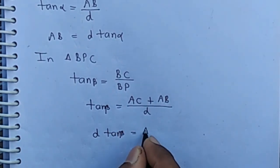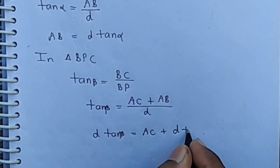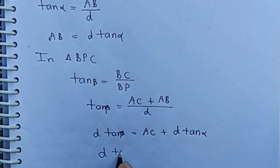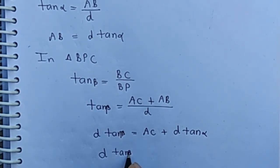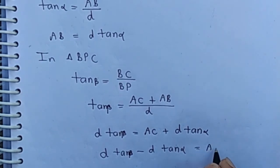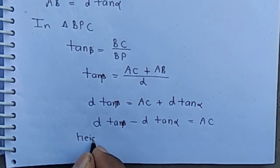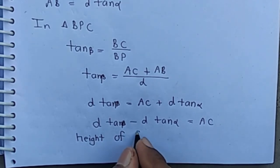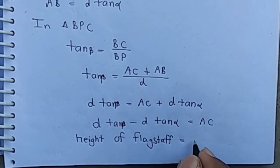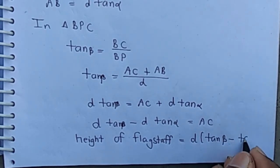Therefore, AC equals D·tan(beta) minus D·tan(alpha), which gives AC equals D·(tan(beta) minus tan(alpha)). Hence the height of the flagstaff is D(tan β − tan α), which is proved.